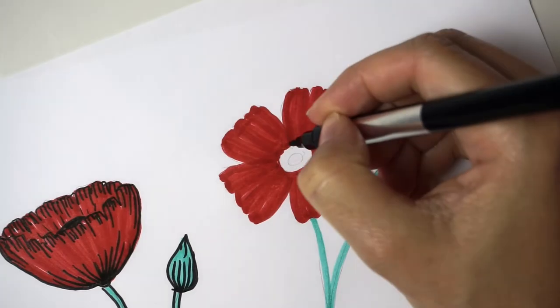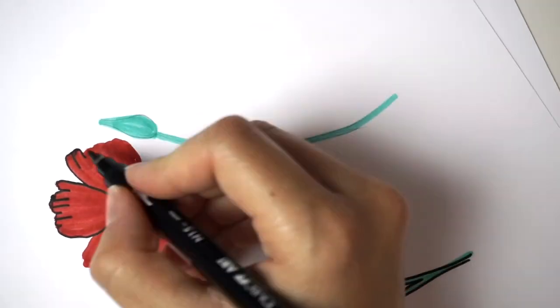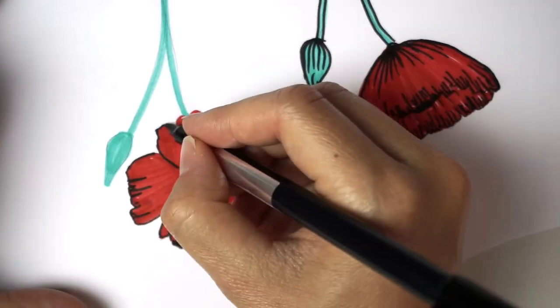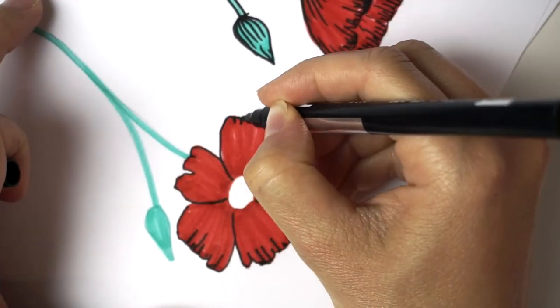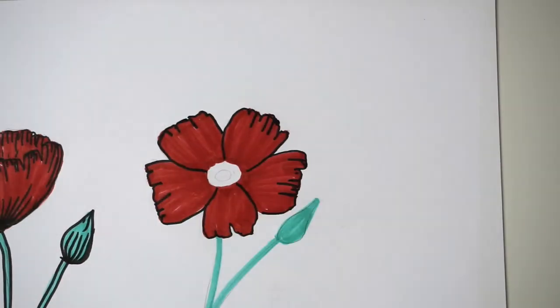But sometimes when you draw you need to do them a bit different, but the eye still perceives it as a poppy flower. And here I had to turn the paper around to be able to do all the lines in the right direction.